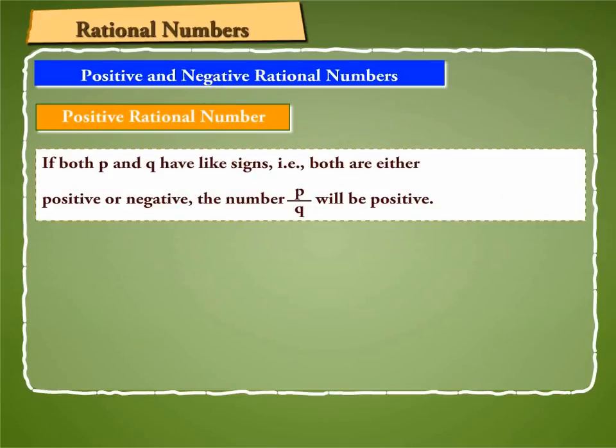So if both P and Q have like signs, that is, both are either positive or negative, the number P by Q will be positive.